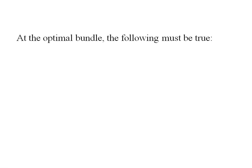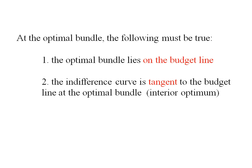Now at the optimal bundle a few things must be true. We know the optimal bundle needs to lie on the budget line. We're going to be exhausting our income in this case. Also the indifference curve is going to be tangent to the budget line at the optimal bundle.